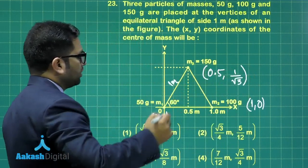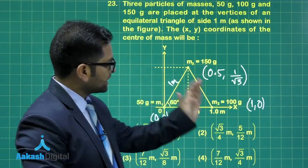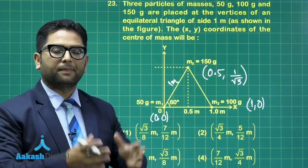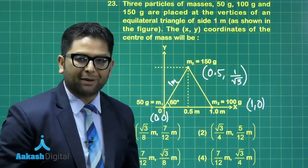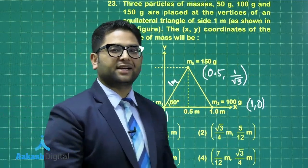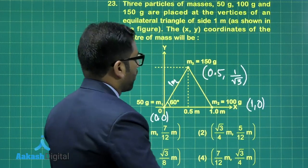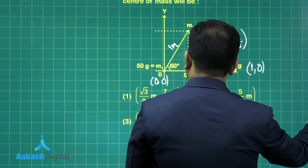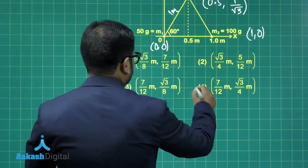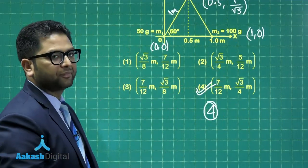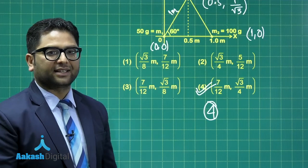So here I go, x1, y1, x2, y2, x3, y3. So what would be x_cm? M1 x1 plus M2 x2 plus M3 x3 divided by M1 plus M2 plus M3. Likewise, you can calculate y_cm as well, and eventually you will be getting option number 4 as the correct one. Let's now move to the next.